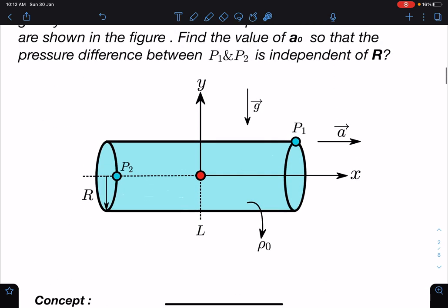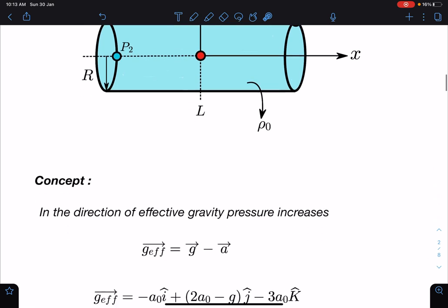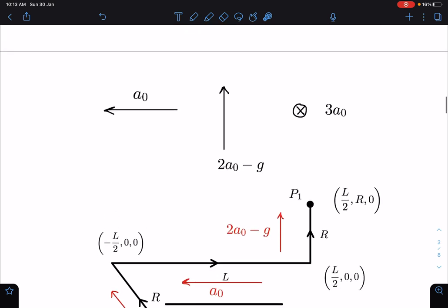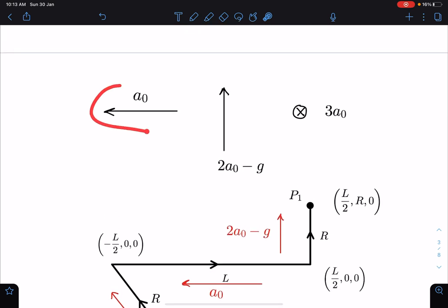Now let's choose a path from P₁ to P₂. So I'm going to choose this path like this: first parallel to y, then parallel to x, and then parallel to z axis. So you can see here this effective gravity component along -x is a₀, towards positive y is 2a₀ - g,